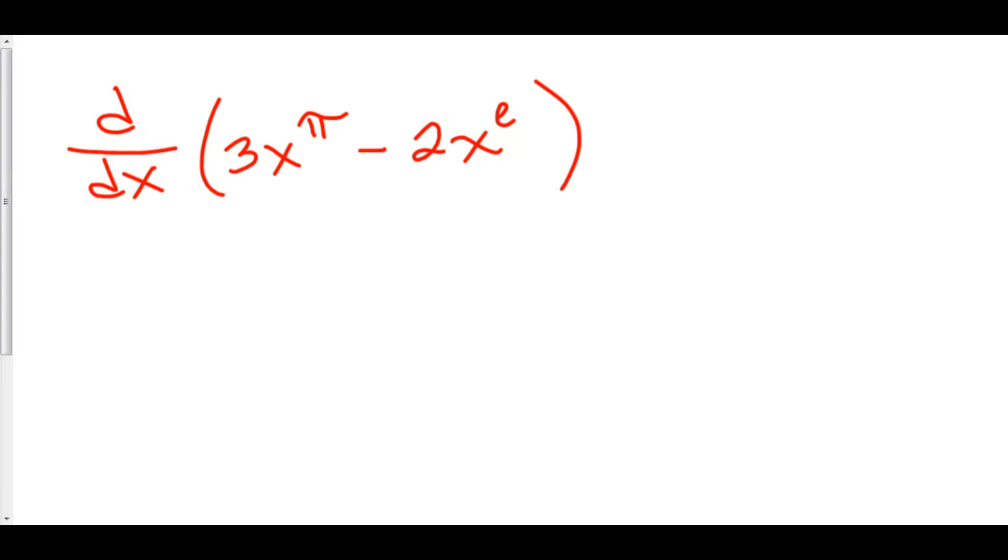Here's another example. The derivative of 3x to the pi. We'll take the pi, move it in front. That becomes 3 times pi times x. Then we'll subtract 1 from the pi. Done. That's our derivative.